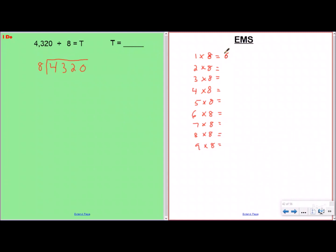So one group of eight is obviously eight. Two groups would be 16, 24, 32, 40, 48, 56, 64, and 72.